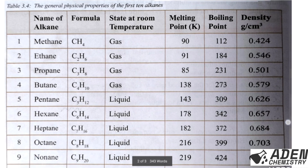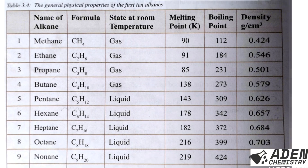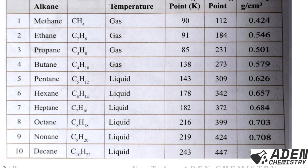For the physical properties of alkanes, we have the first 10 members from methane to decane, with their molecular formulae, state at room temperature, melting point, boiling point, and density. The first four — methane, ethane, propane, and butane — are gases; from pentane to decane they are liquids; and beyond decane they are solids. Melting point, boiling point, and density all increase along the series.